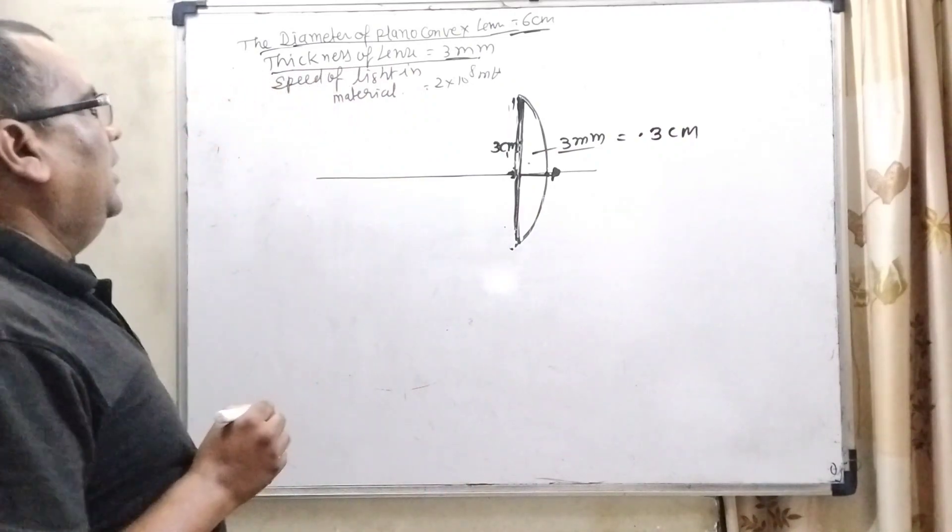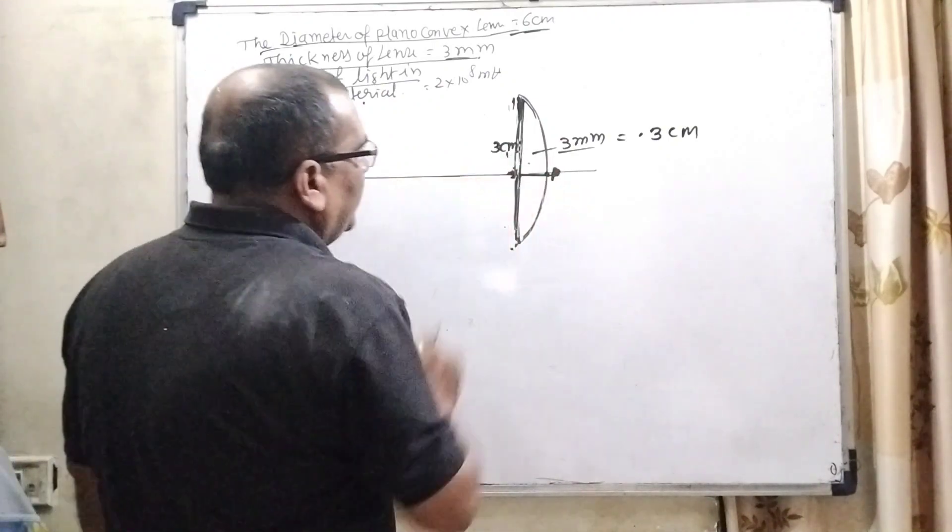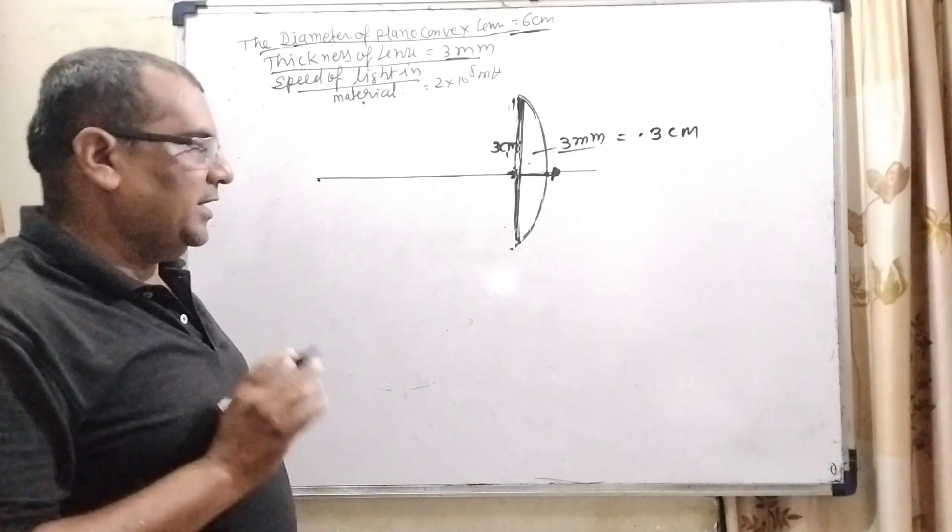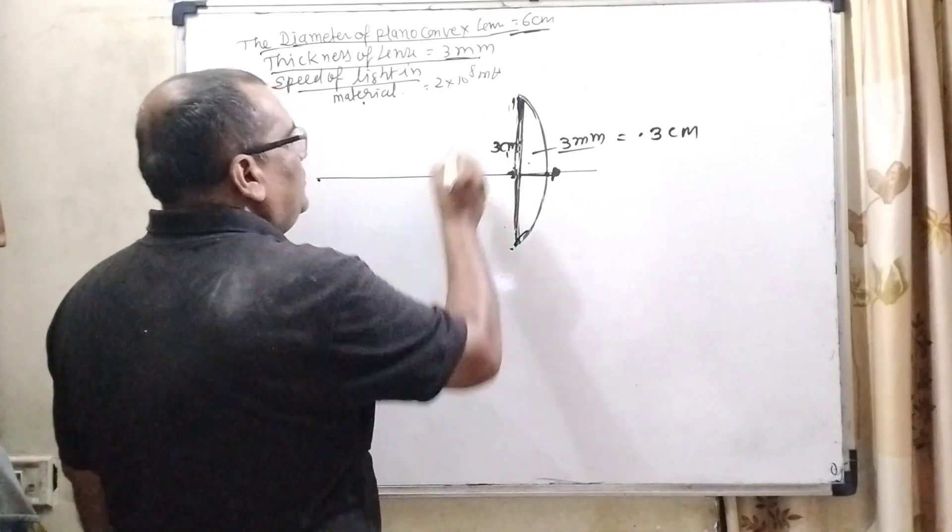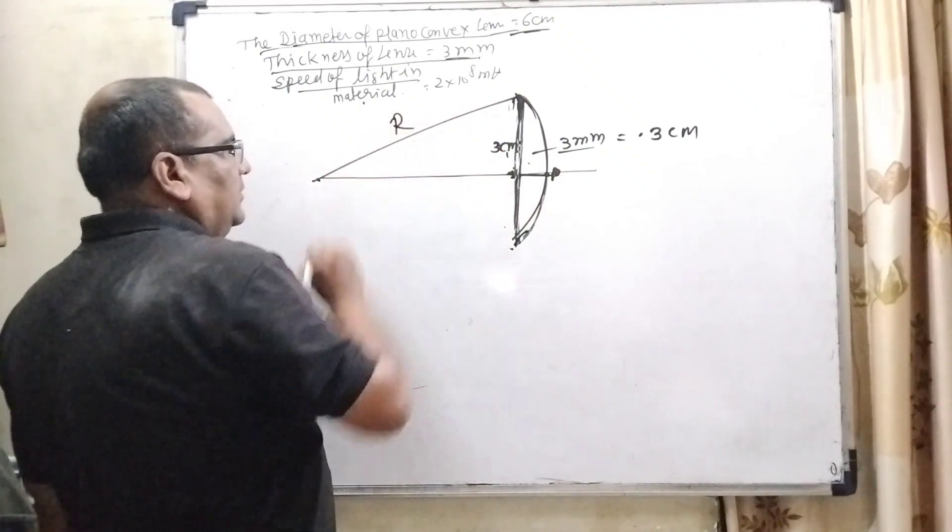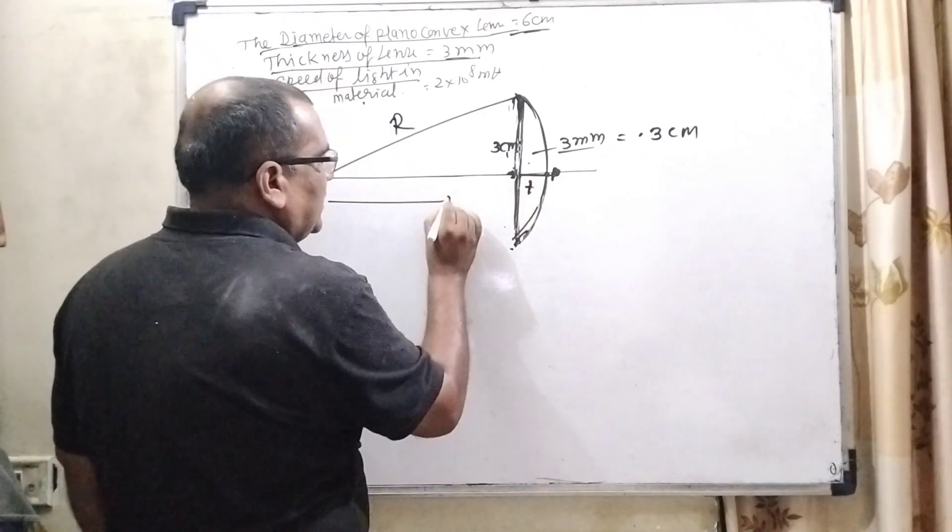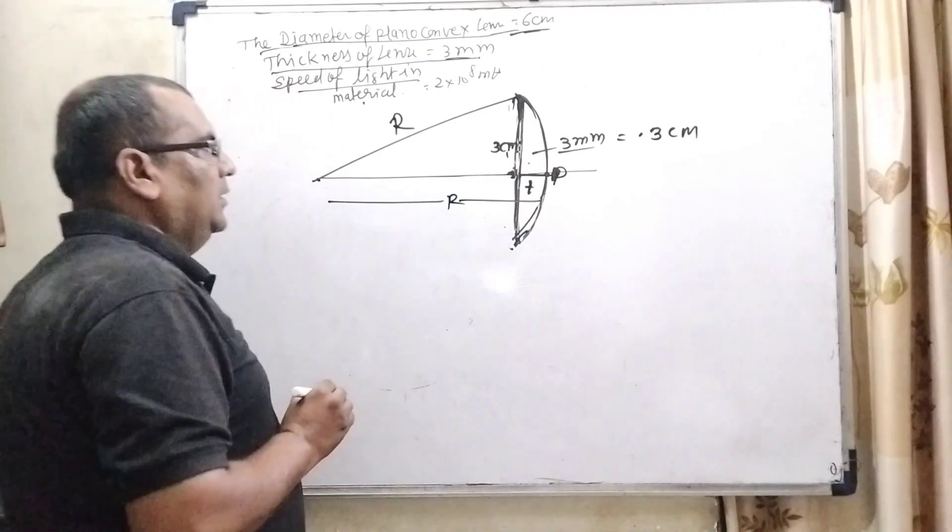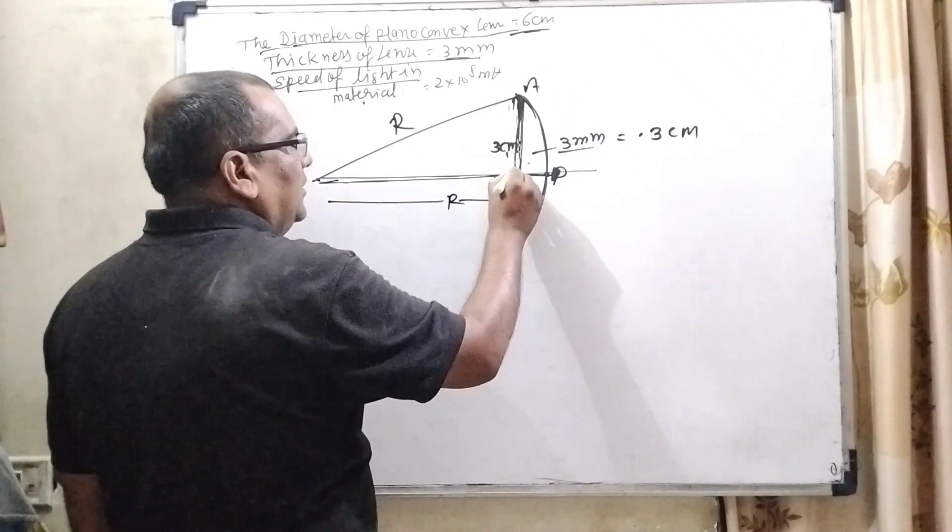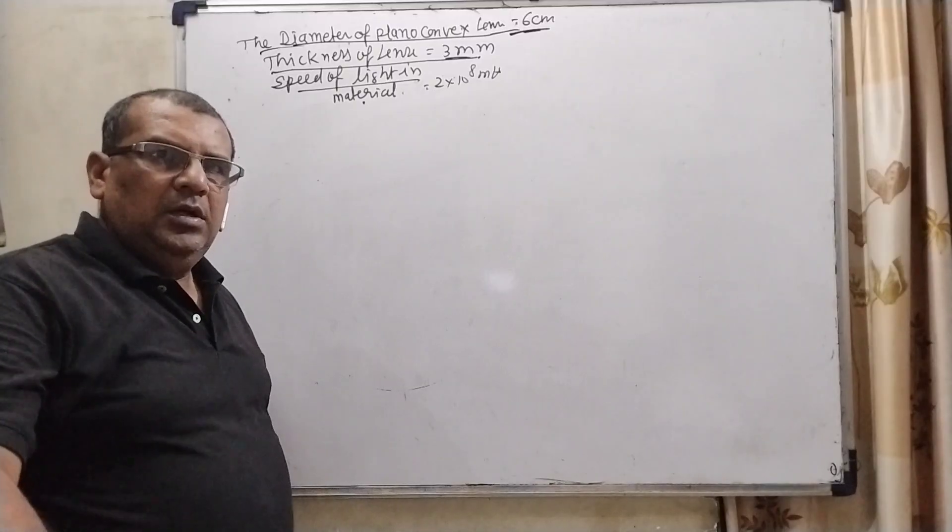And speed of light in material means when light passes through this lens, then speed becomes 2×10^8 m/s. Now here, let us first, we know that this is the curvature. So this curvature is R. This is thickness t and total distance is R from the pole. So this remaining distance, let us say a, b.